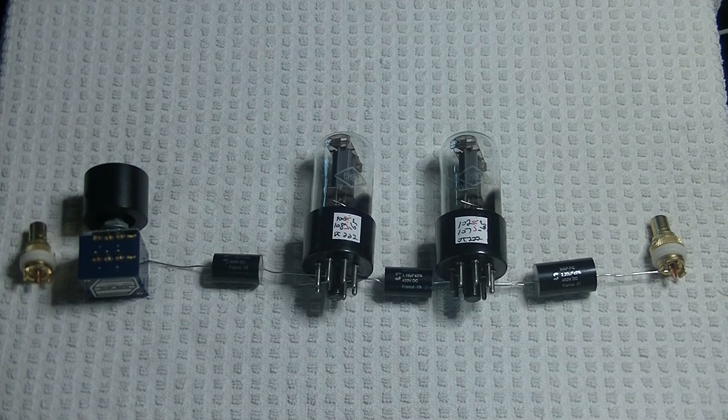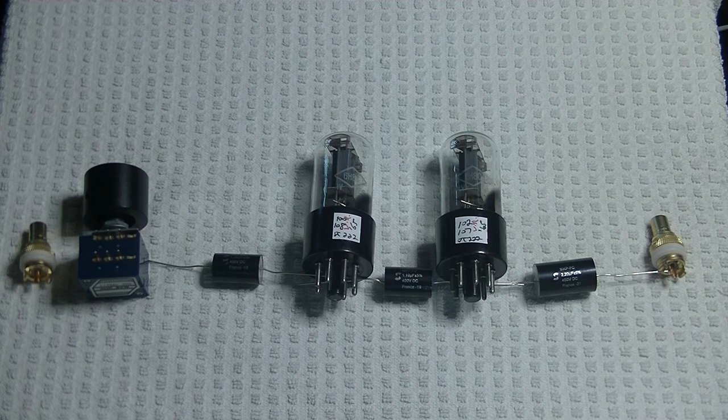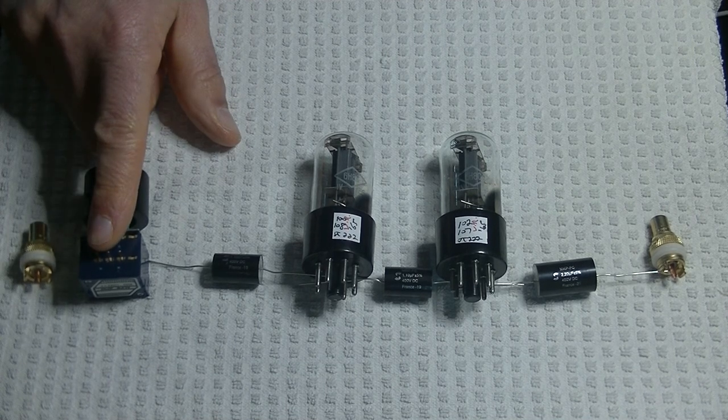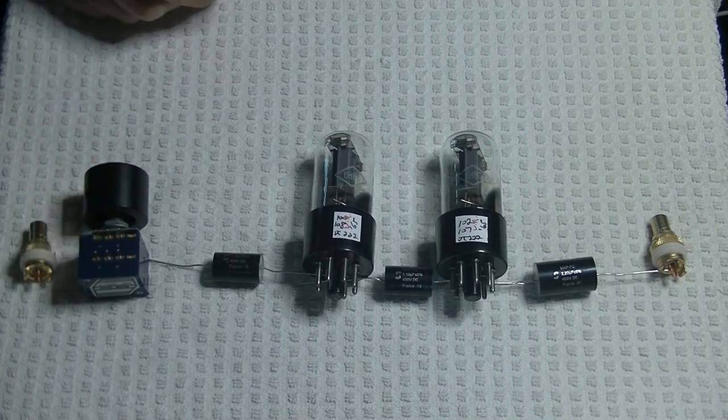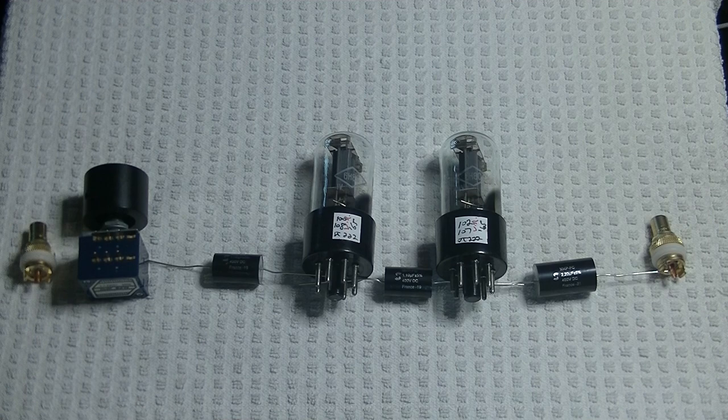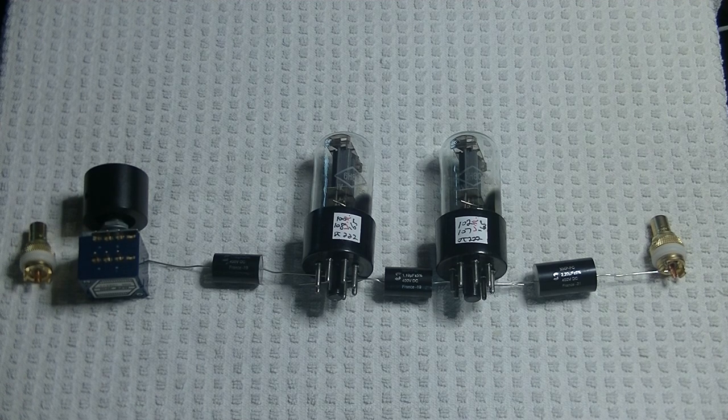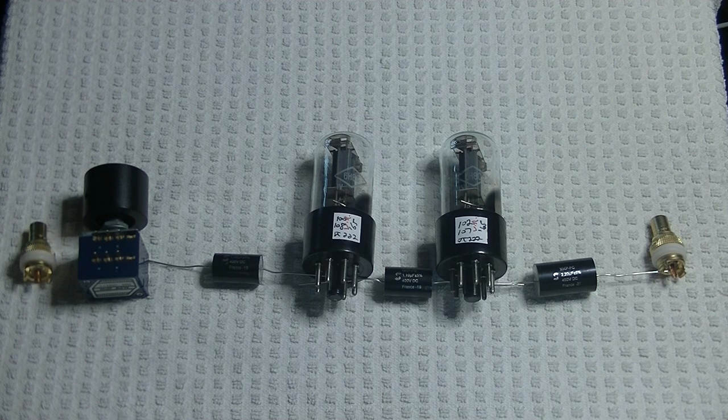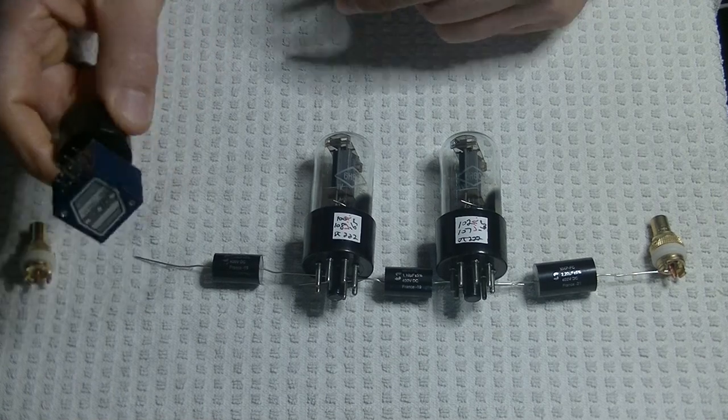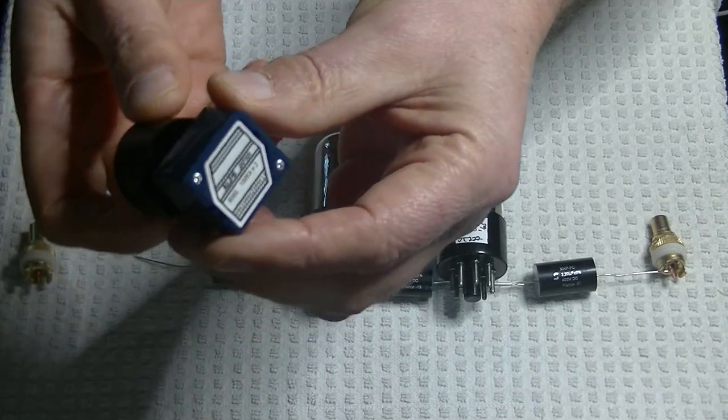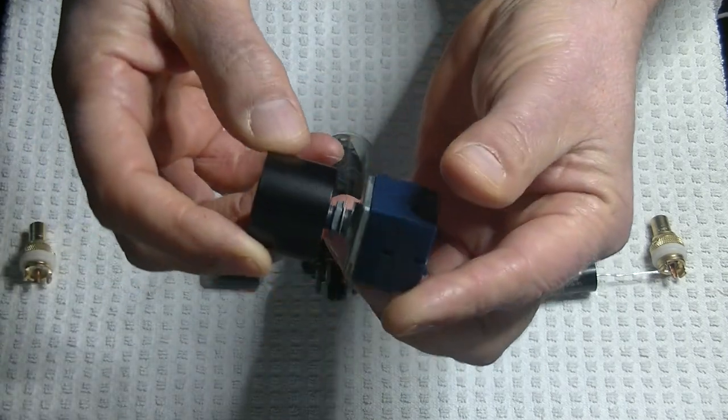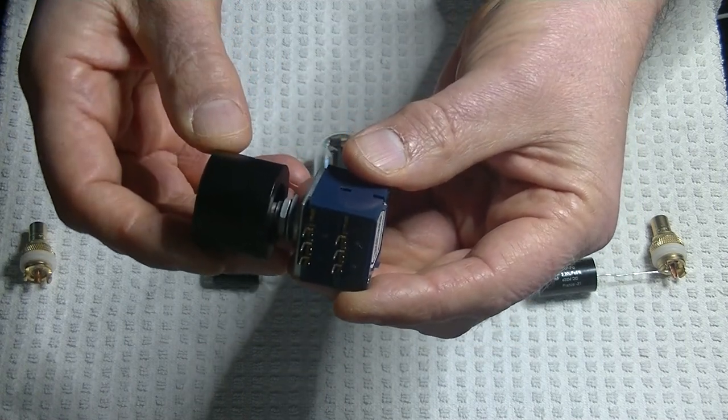Now, these volume pots come in a huge number of types and configurations. They can be as simple as a resistor track and a wiper, like this Alps, to the same basic pot with a remote-controlled motor attached to stepped pots that might have 23 resistors mounted to a complicated switch, or they might even be a digital switched pot. Now, I use the Alps pot exclusively in my prototype builds and in my kit amps because they are very low noise. They're affordable. They sound great. And most importantly, they're reliable.